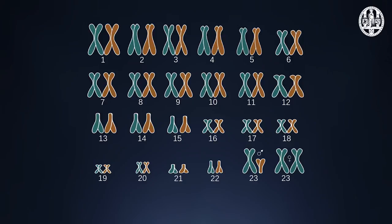To uniquely identify the 23 distinct chromosomes in humans, we sort and number them by decreasing size. Of each distinct chromosome, we have a pair — one from our mother and one from our father — so we have in total 23 times 2, which is 46 chromosomes. To have this set of pairs of chromosomes is referred to as diploid. To have only one of each chromosome is referred to as haploid.